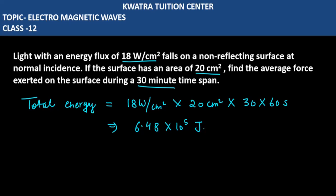Now here, we need to find the average force. What do you need to find force? You need to find momentum. We know average force is equal to momentum over time. So first we have to find P, and we get P as U over C. What is our total energy? Energy over C will be the momentum.